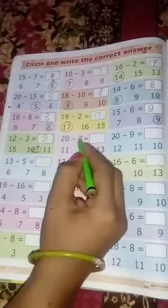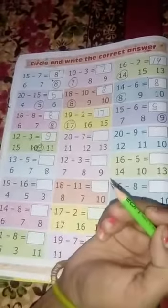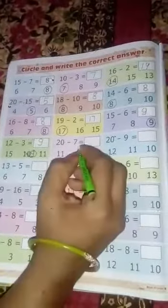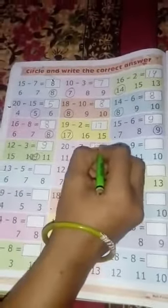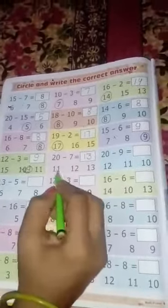Next, 20-7. 20 में से 7 गया तो कितना हो जाएगा? 20 में से 7 गया तो 13. So, right in box 13. Who is the right answer? 11, 12, and 13. 13 is a circle.